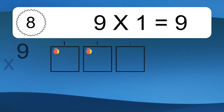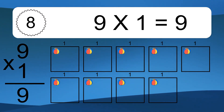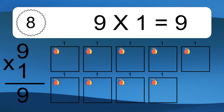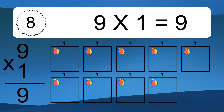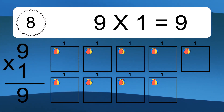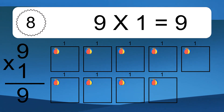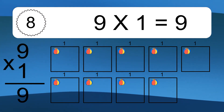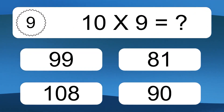9 times 1 equals 9. We have 9 boxes, and each box has 1 colorful ball inside. If you count all the balls in all the boxes together, you will have 9 times 1 balls. This equals 9 balls.